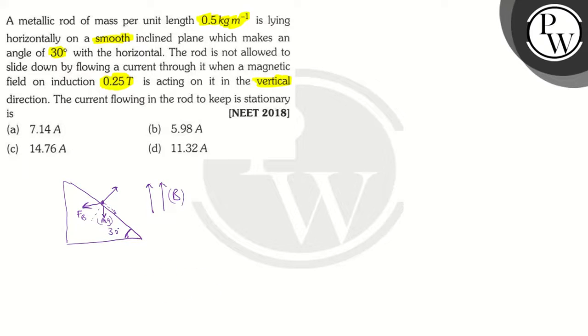Using the right hand thumb rule, the Maxwell's right hand thumb rule, we can determine the direction of the current. We can see that if the current is coming towards the user, that is the current I is going to be outwards, towards the viewer, then the force will be towards left, as shown in the diagram.